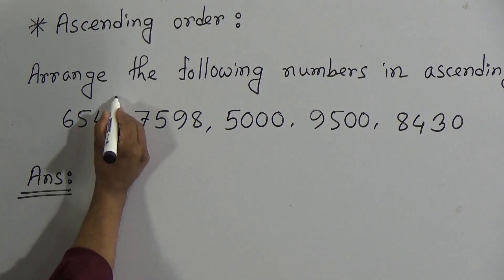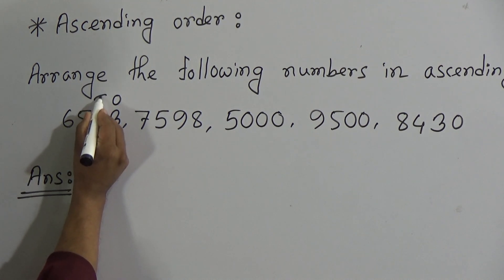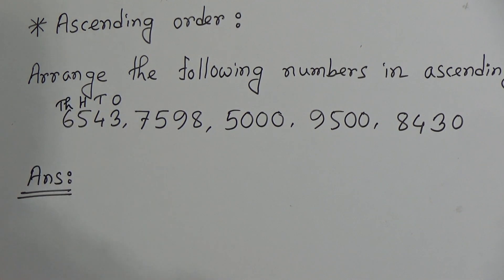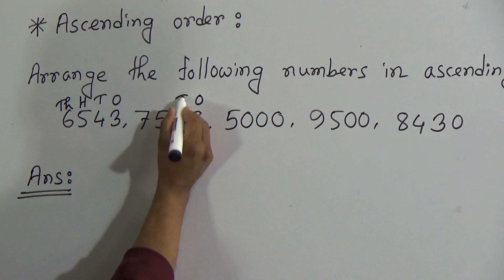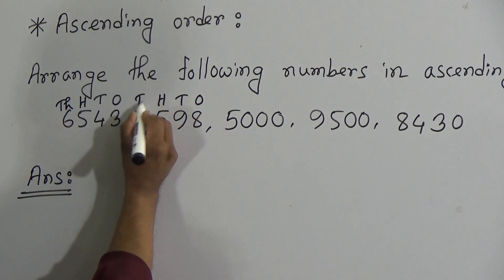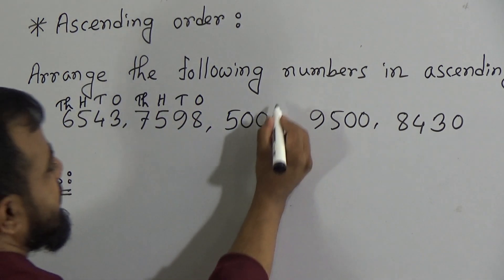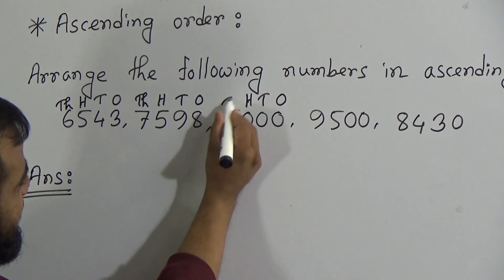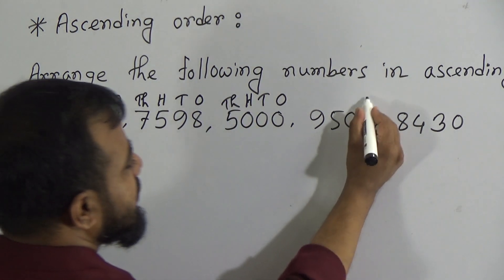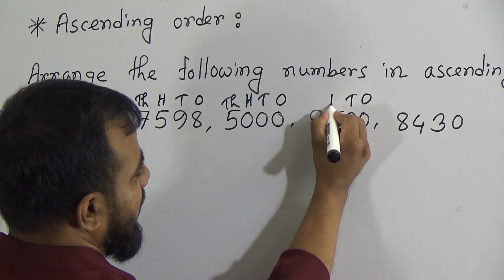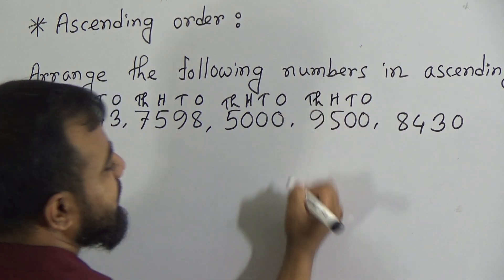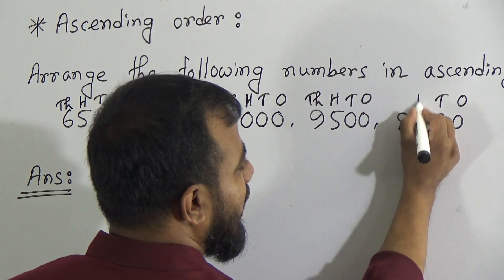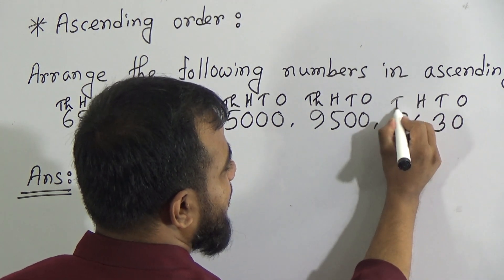That means this 3 is in the 1's place, this 4 is in the 10's place, this 5 is in the 100's place, and this 6 is in the 1000's place. Like this, 8 is in the 1's place, 9 is in the 10's place, 5 is in the 100's place, and 7 is in the 1000's place. Again, this 0 is in the 1's place, this 0 is in the 10's place, this 0 is in the 100's place, and this 5 is in the thousands place. Also, 0 is in the 1's place, 0 is in the tens place, 5 is in the hundreds place, and 9 is in the thousands place. And this 0 is in the 1's place, this 3 is in the tens place, this 4 is in the hundreds place, and this 8 is in the thousands place.